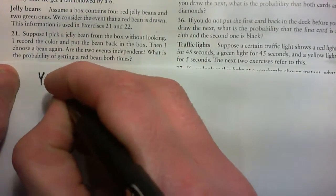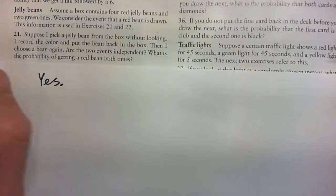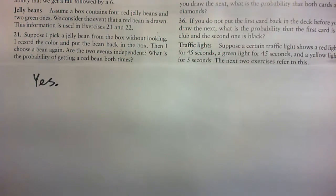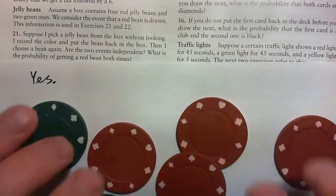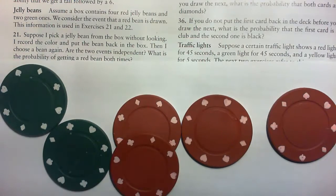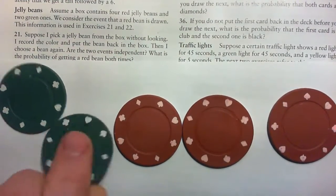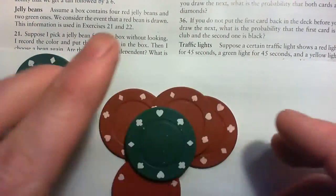I would say yes because you put the bean back in again. So pretend these are jelly beans — four red, two green. We picked one randomly but we put it back in the box. So now the second event doesn't depend on the first one. It would be different if you took something out and didn't replace it and then took another one, because then the probability is different. So if you replace it again for the second pick, then they're independent — the picks are independent.